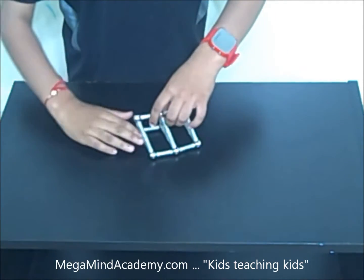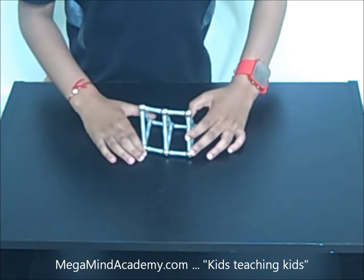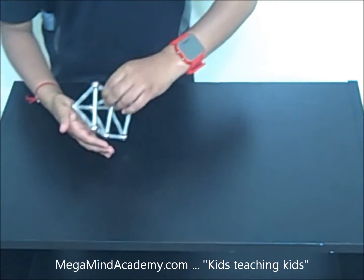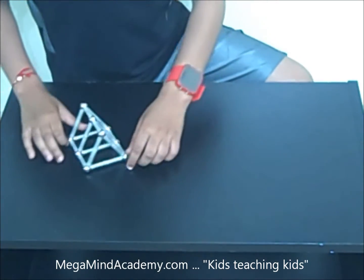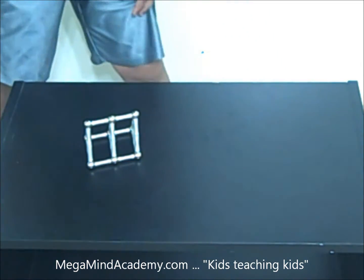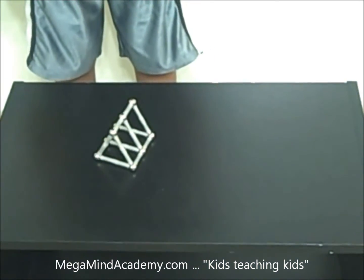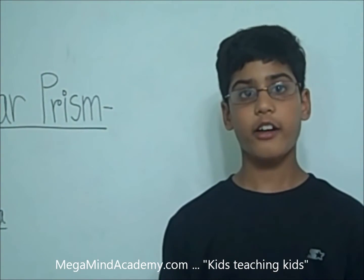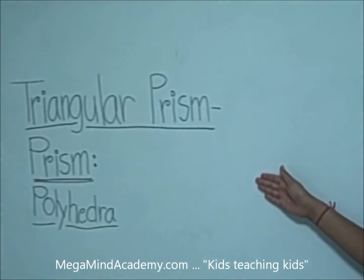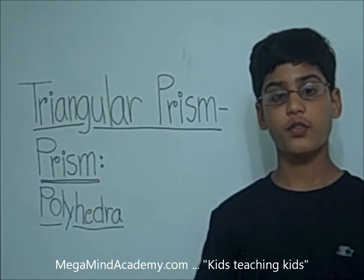Now we put the cross section inside. So a triangular prism looks like this with the cross section inside. Today we learned about how to build a triangular prism. A triangular prism is a type of prism which is a type of polyhedron. Thank you for watching this video.